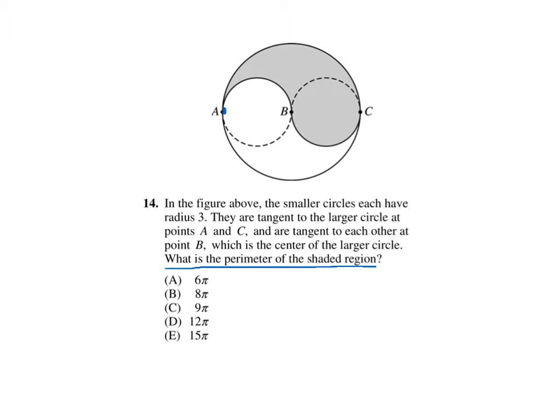Specifically, the shaded region is built up of a small half circle, an identical small half circle, and a larger half circle. So all we need to do is figure out the lengths of each of those, and we're good to go once we add them up.